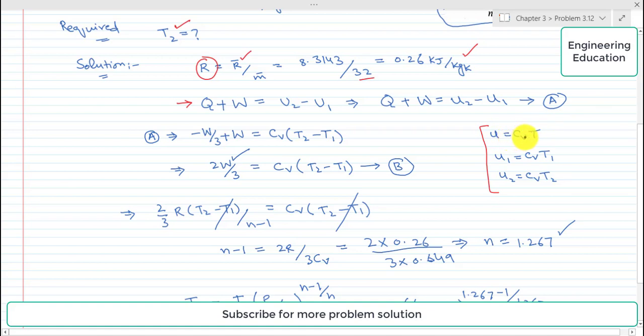So the general expression for specific internal energy is small u is equal to Cv into T. For state 1 before compression we can write it as small u1 and it is equal to Cv into T1.